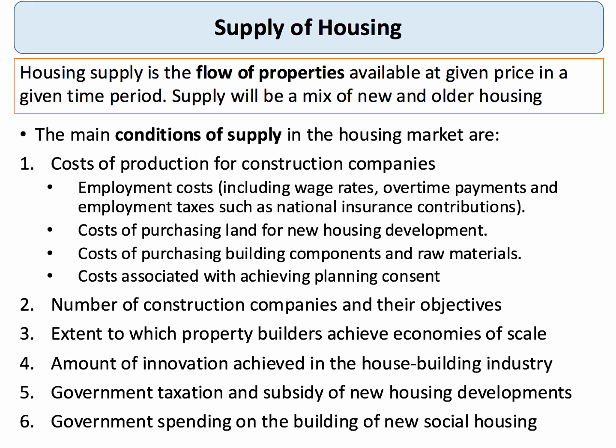Also important is the actual number of construction companies in the market and their objectives. For example, a construction company simply seeking to maximise profit might actually build fewer homes than a construction company looking to grow market share. Another key supply side factor is the extent to which construction companies achieve economies of scale. Take a big housing development with between 300 and 500 new homes — it should be possible to bring down the unit cost of those homes through increasing returns to scale, or economies of scale.